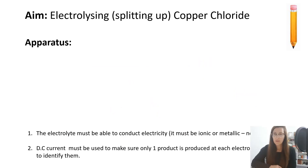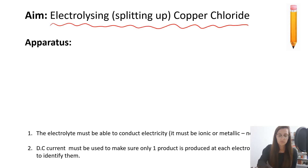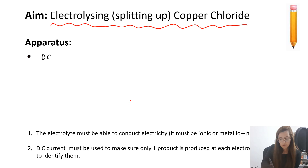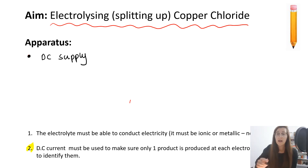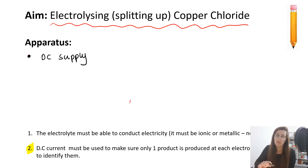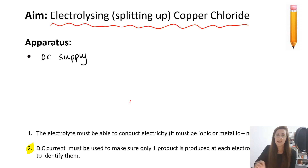We're going to look at electrolysing copper chloride — splitting up copper chloride using electricity. The apparatus we need is a direct current supply or a direct current power pack. We need it to be a direct current supply because we want the charge to be moving around the circuit in one direction. If we used alternating current, we would not get one product produced at each electrode — we'd get a mixture. So we use direct current. It's really important to remember that as a common exam question.